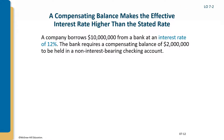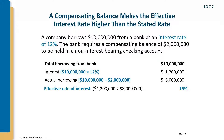For example, a company borrows $10 million from a bank at 12%. The bank requires a compensating balance of $2 million held in a non-interest bearing checking account. The company borrows $10 million and interest charged is $1.2 million, but they can only use $8 million because $2 million must stay in the bank. So $1.2 million divided by $8 million means their actual interest rate is 15% — higher than the stated 12%.